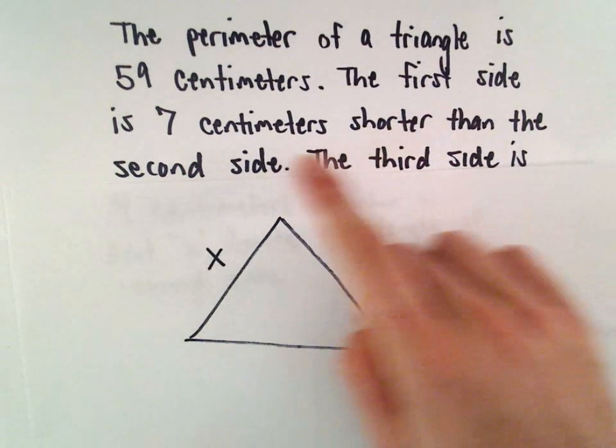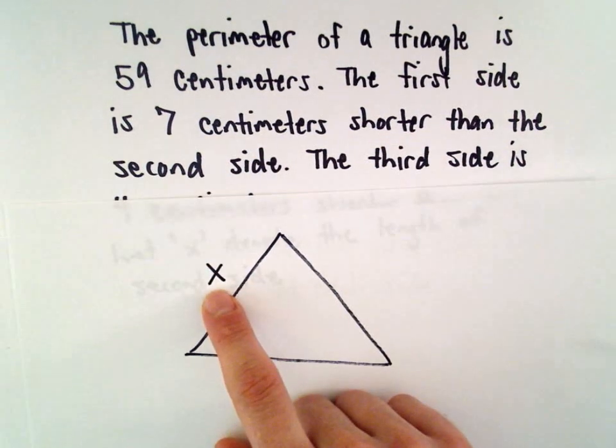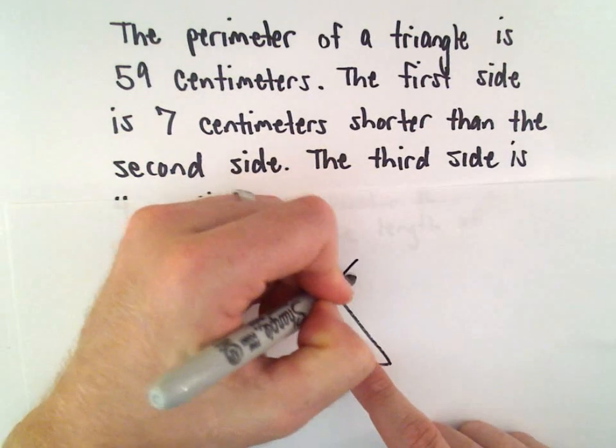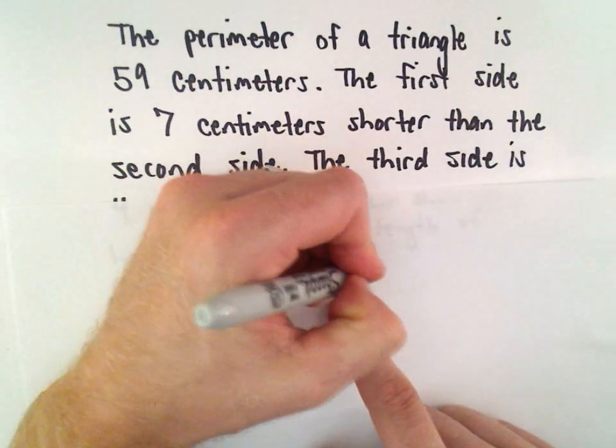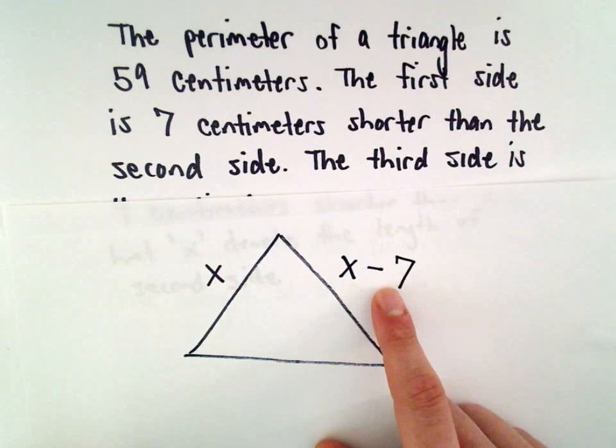It says the first side is 7 centimeters shorter than that second side. Well, to get the other side, we would have to take the length of the second side. And since it's 7 centimeters shorter, we would have to take 7 away to get that length.